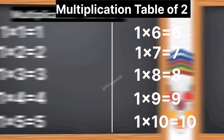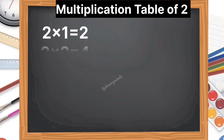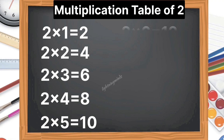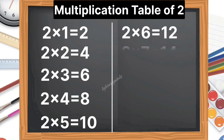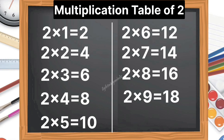Multiplication table of 2. 2 1s are 2, 2 2s are 4, 2 3s are 6, 2 4s are 8, 2 5s are 10, 2 6s are 12, 2 7s are 14, 2 8s are 16, 2 9s are 18, 2 10s are 20.